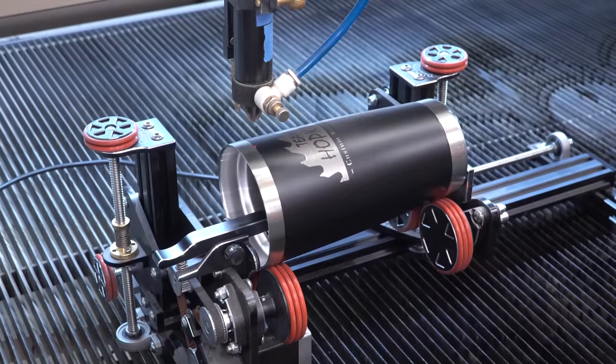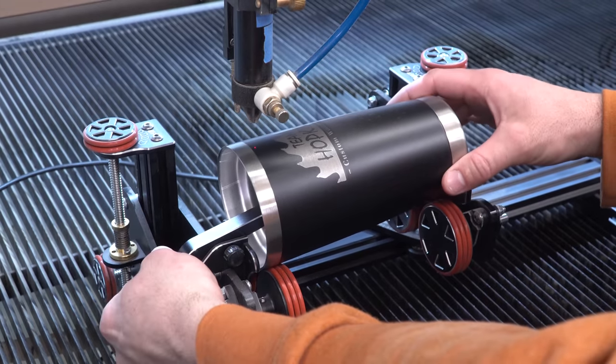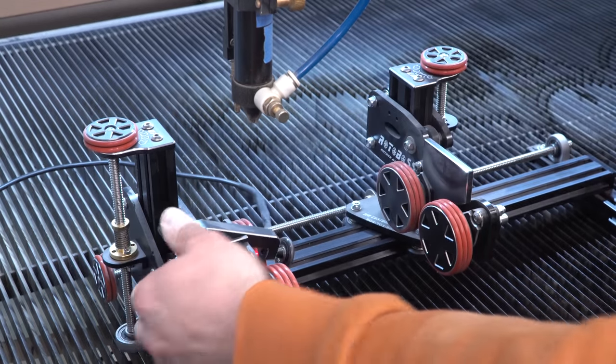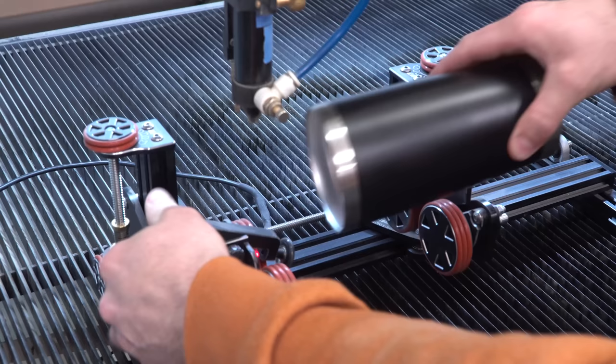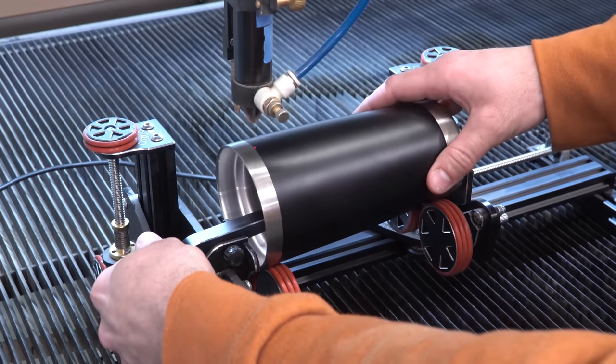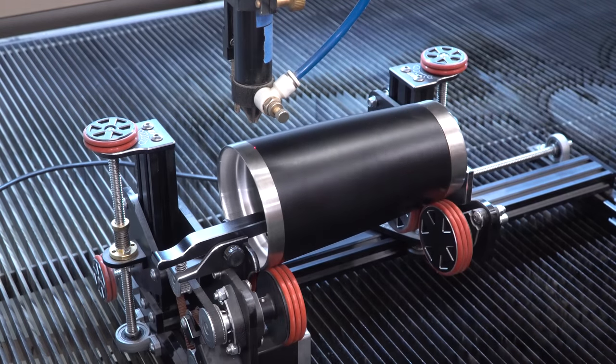Once you get on a roll and you have everything running smoothly, you just grab the spring loaded clip, slide the cup out, throw your next one in there, shut the lid and hit start. It's just that simple.